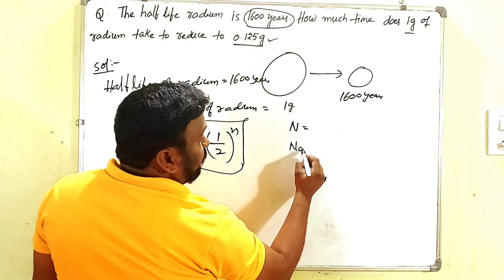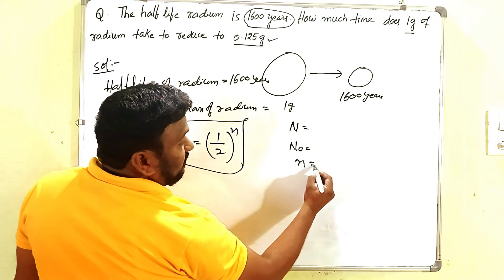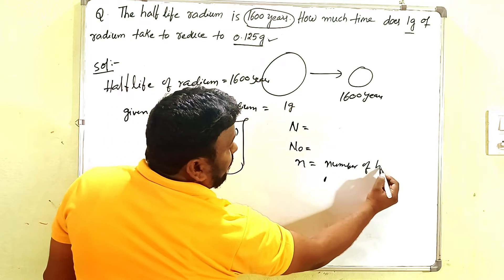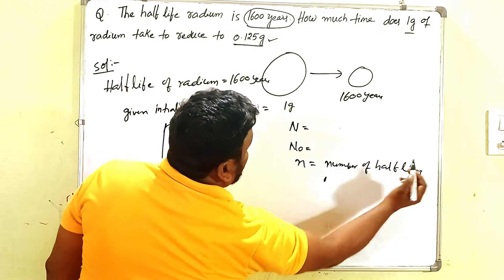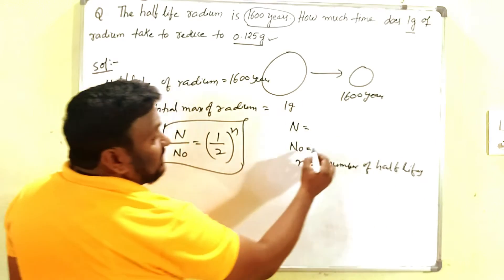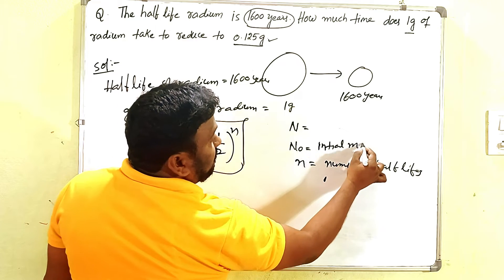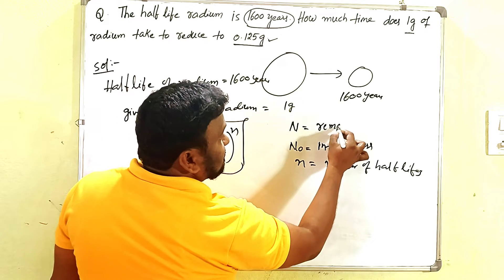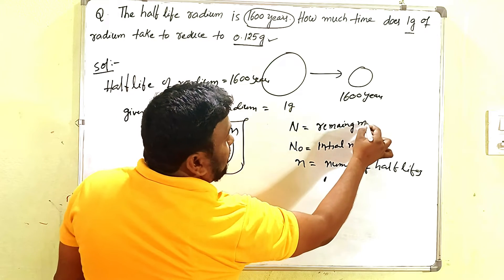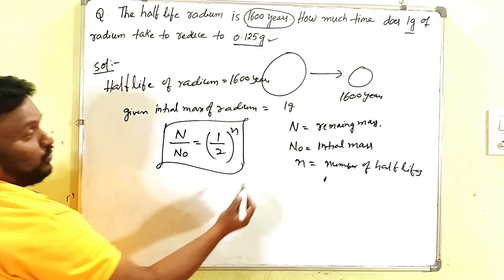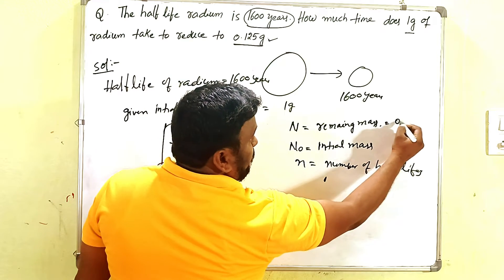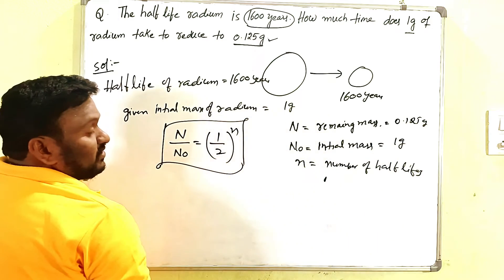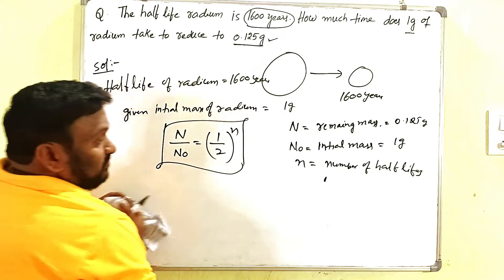N by N₀, here N is what, and what is N₀, and what is small n? Small n is the number of half-lives. And N₀ is the initial mass, and N is the remaining mass or required mass. Here what is N? 0.125 grams. And initial mass is here one gram.